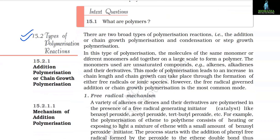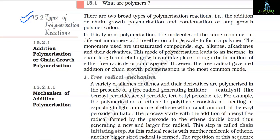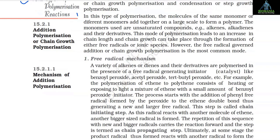15.2 Types of Polymerization Reaction. There are two broad types of polymerization reactions: addition or chain growth polymerization and condensation or step growth polymerization. In addition polymerization, the molecules of the same monomer or different monomers act together on a large scale to form a polymer. The monomers used are unsaturated compounds such as alkenes, alkadienes and their derivatives. Chain growth can take place through the formation of either free radicals or ionic species; however, free radical governed addition polymerization is the most common mode.